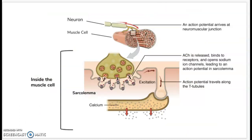When you want a muscle to contract, your brain sends a signal to the neurons that are connected to the muscle cells. The muscle cell receives a signal from the neuron, which sends an action potential down the sarcolemma. The action potential reaches the sarcoplasmic reticulum, which releases calcium through calcium channels.